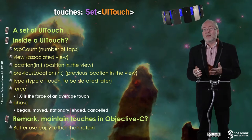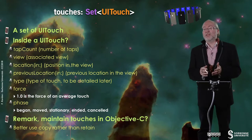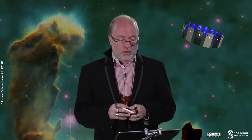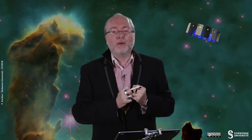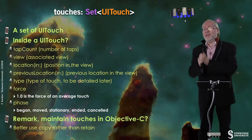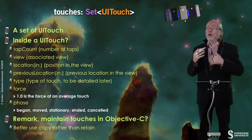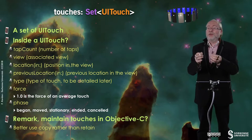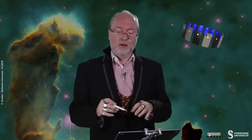And then you have the phase: began, moved, stationary, ended, cancelled. One remark: when you are dealing with Objective-C and you want to keep a link or maintain some touches, you should use copy rather than retain. Because there is a mechanism that reuses touches, and that has an influence on the memory management, which is now totally transparent for you in Swift.